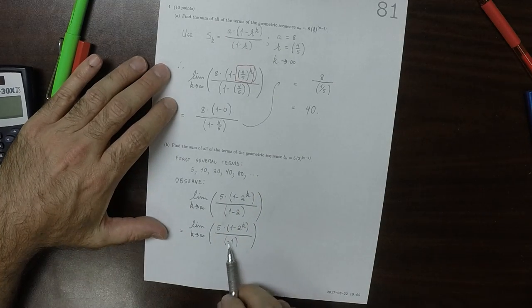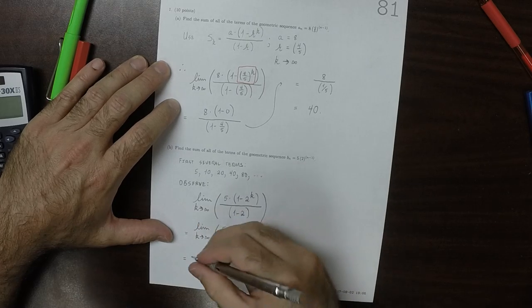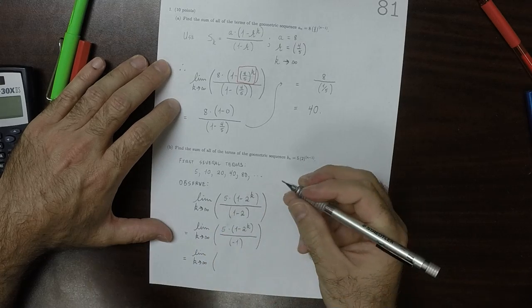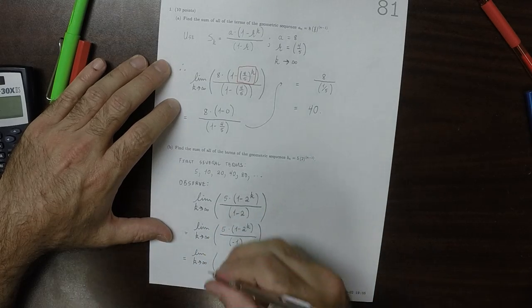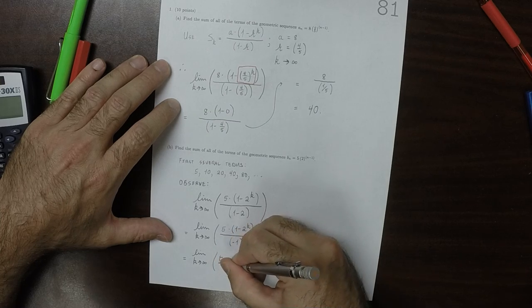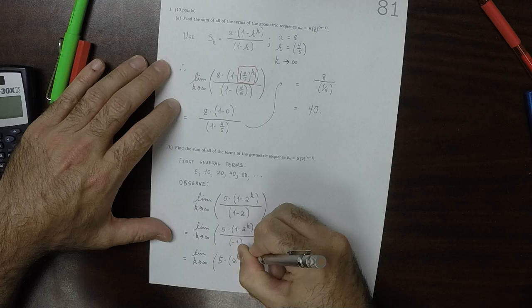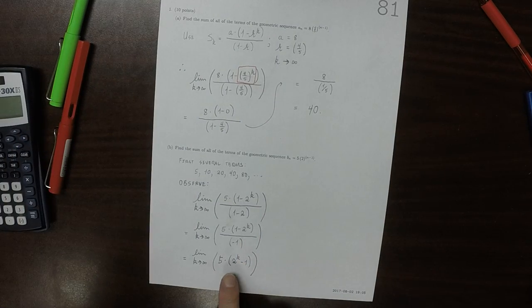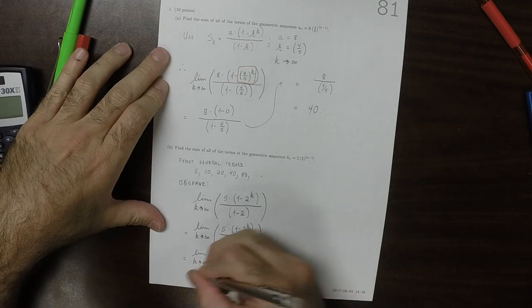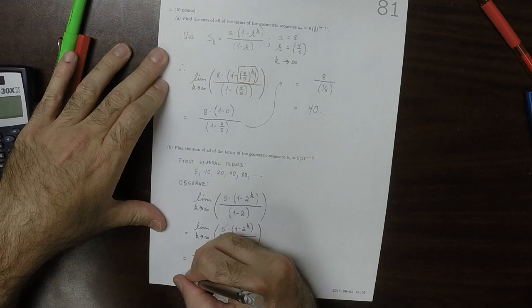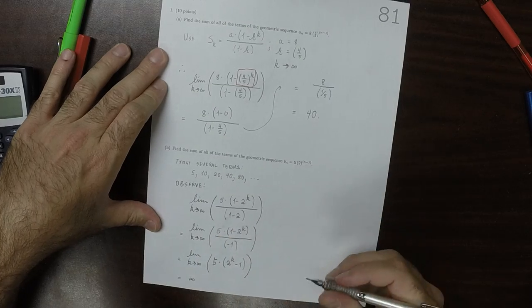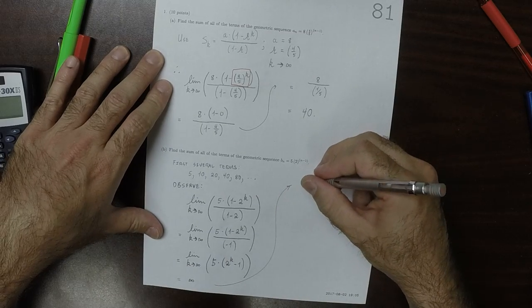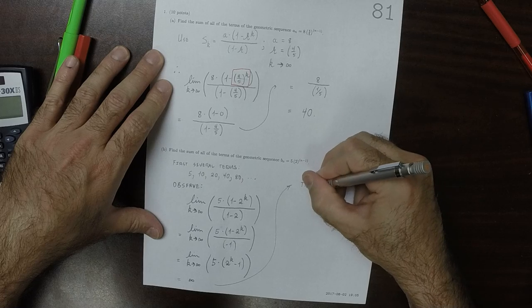And now I'll distribute the negative 1 into the 1 minus 2 to the K to get the limit as K goes to infinity of 5 multiplied by 2 to the K minus 1. Well, 5 is a constant, 1 is a constant, 2 to the K goes to infinity. So this is 5 times infinity, if you like, which is just infinity, which is to say the sum diverges.